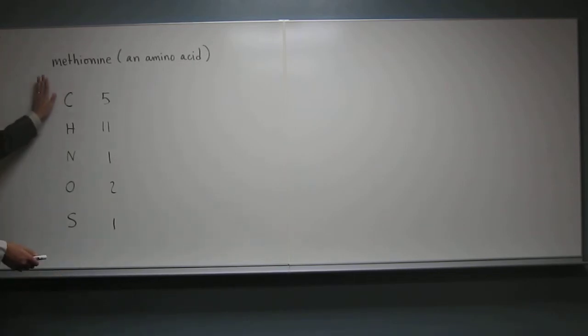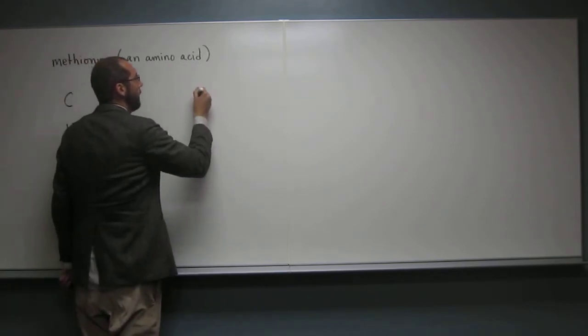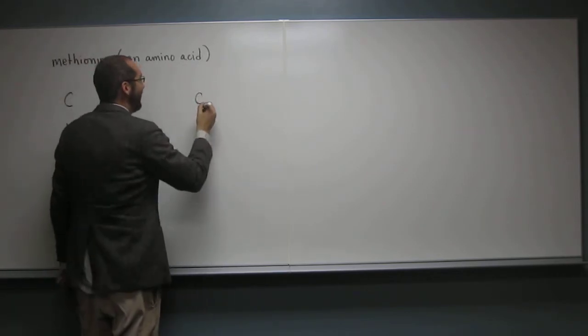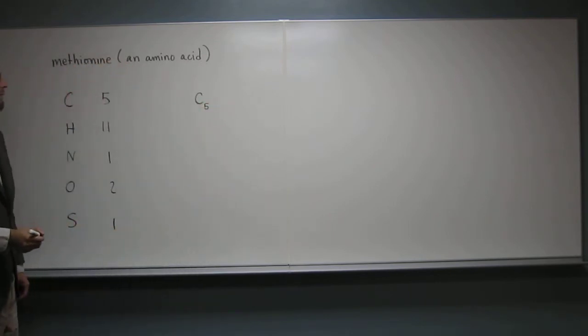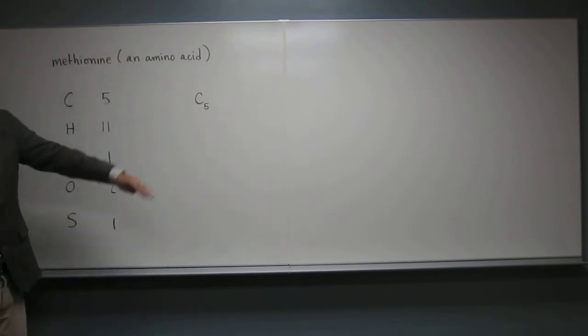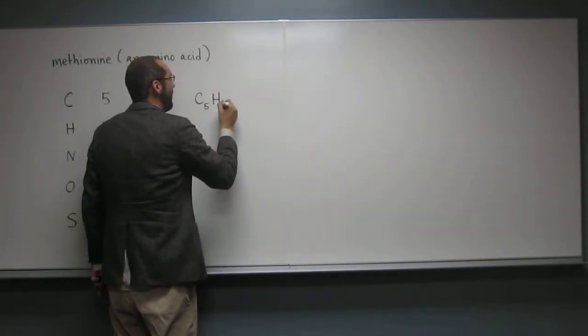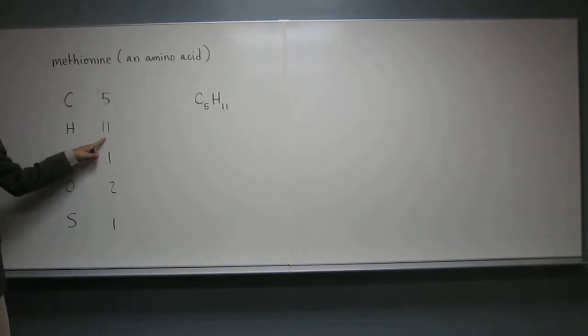So let's just go ahead and do this one as practice, OK? So first thing we're going to write is a what? C. Very good. And then below that? A 5, right? Oh, great answer. And then after that 5, what do we write? H. H. And then below? 11. 11. Very good, because that's that one, right?